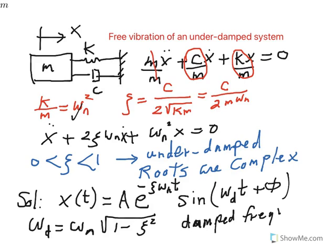The damped frequency ωd is always smaller than the natural frequency ωn. Remember, you only have a damped frequency if you have an underdamped system — damped frequency doesn't exist or is not defined for a critically damped or overdamped system. The constants A and φ must be determined based on the initial conditions.